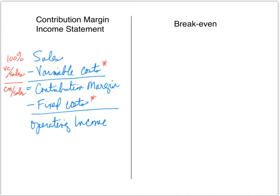Now that we have our contribution margin income statement, we can start talking about breakeven analysis and how we go about doing that. Keep in mind what breakeven means: breakeven means there's no operating income — our revenues equal our costs.